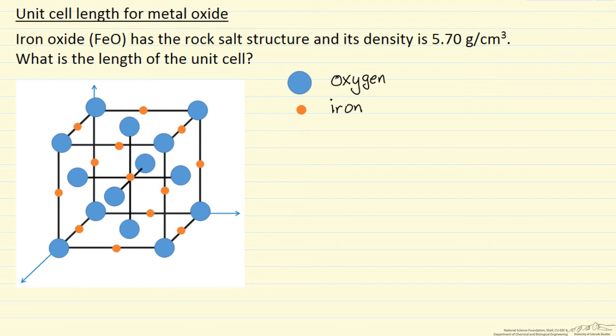Here we want to determine from the density of iron oxide what is the length of the unit cell. So I've drawn the unit cell. Iron oxide has the rock salt structure,